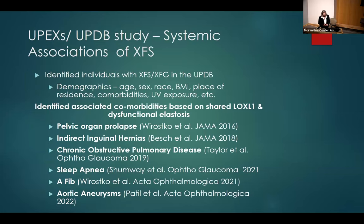The systemic associations we looked at included age, sex, race, BMI, place of residence, UV exposure, and comorbidities. Aisha Chase was involved in a lot of these papers. We found that pelvic organ prolapse was associated, as were indirect inguinal hernias, COPD, sleep apnea, AFib. Aortic aneurysms, as I mentioned, we found were not associated — there was not a clear association between aortic aneurysms in our patient population.